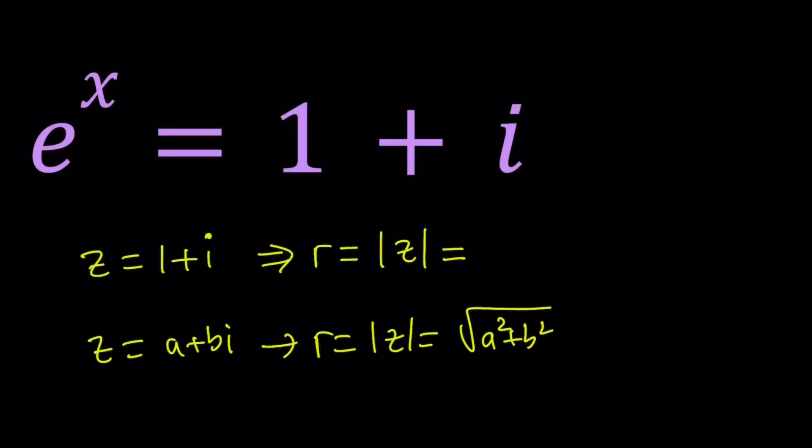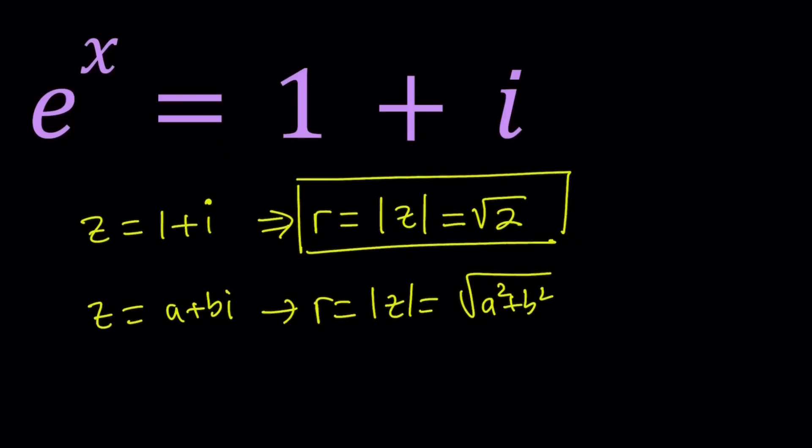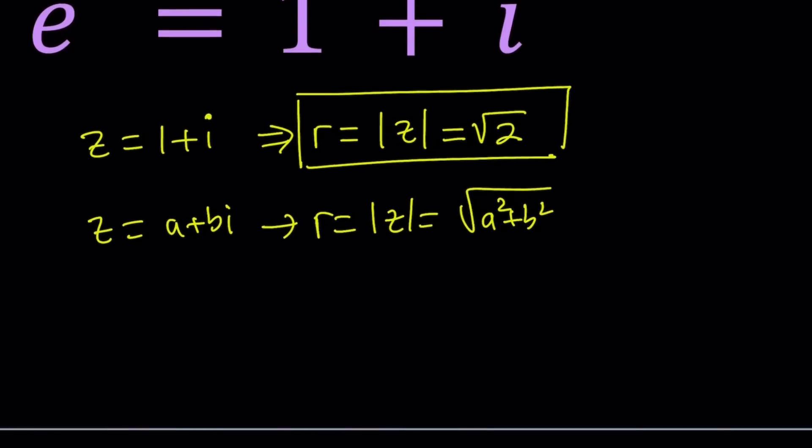Then its modulus is the square root of a squared plus b squared. Of course a and b are real numbers and r is also a real number. In this case it's going to be square root of 2 because a is 1, b is 1. Now why do we need r?